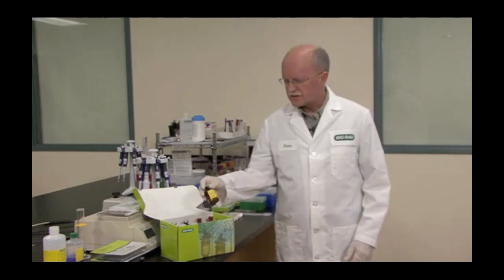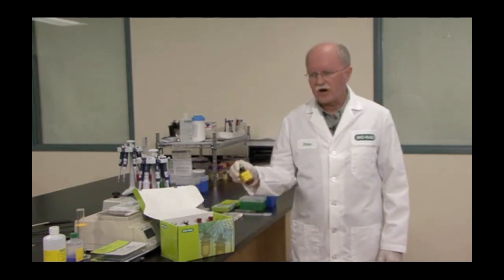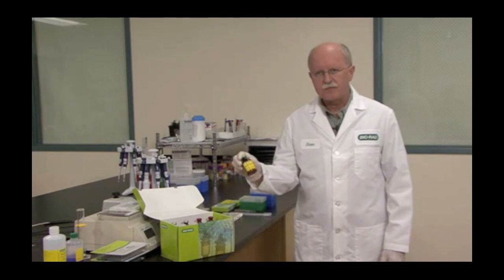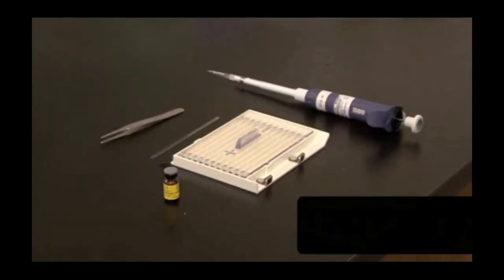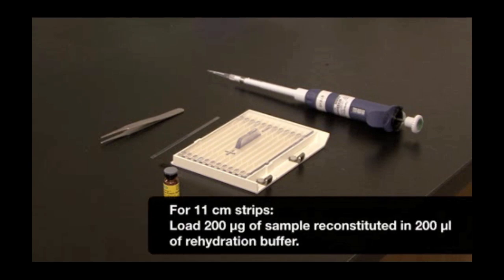The components of the rehydration buffer are urea, CHAPS, DTT, Amphylite, and Bromophenol Blue. I will be loading 200 micrograms of E. coli sample that has been reconstituted in rehydration buffer onto an 11 centimeter pH 4 to 7 IPG strip.